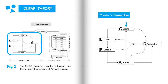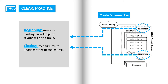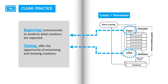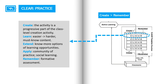I have introduced the theory layer of the CLEAR framework so far. Now let's move on to the practice layer. At the beginning of the course, you need to measure the existing knowledge of students on the topic, and such measurement needs to repeat at the end so that learning progress can be evaluated. Also at the beginning, you need to communicate with students what kind of creations will happen and how they will be evaluated. At the end of the course, offer opportunities for them to present and show their creations. For each lesson, you will follow the CLEAR model from create to remember, with difficulty increasing from lesson one to the final lesson.